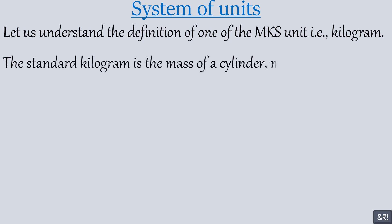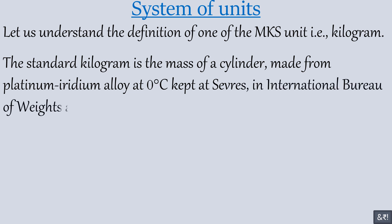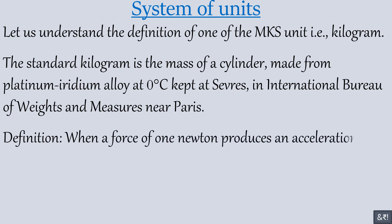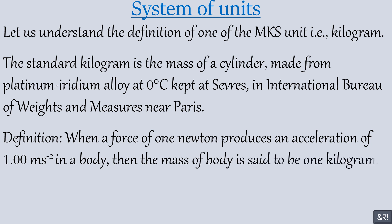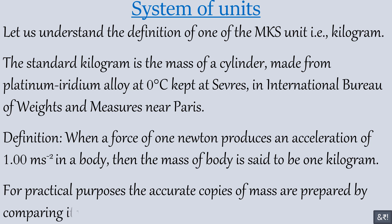Let us understand the definition of one of the MKS unit, that is, kilogram. The standard kilogram is the mass of a cylinder made from platinum-iridium alloy at zero degree Celsius, kept at Sevres in International Bureau of Weights and Measures near Paris. Definition: when a force of one Newton produces an acceleration of 1.00 meter per second square in a body, then the mass of body is said to be one kilogram. For practical purposes, the accurate copies of mass are prepared by comparing it with standard kilogram in Sevres. The multiples and sub-multiples of kilogram are given below.